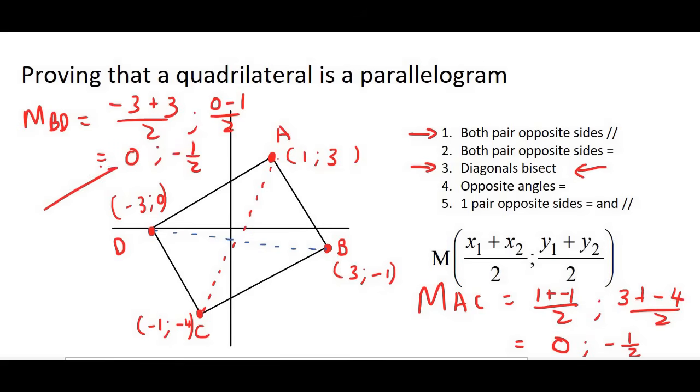So what we can see is that the midpoint of both diagonals is the same. Again, this means that the diagonals bisect each other. So then we could say, therefore, ABCD equals a parallelogram.